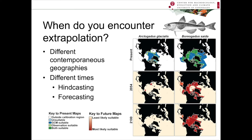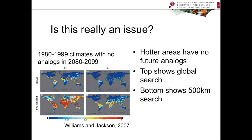You might ask yourself to what degree this sort of extrapolation is really an issue, especially regarding forecasting into time periods that are not that far into the future. The answer is that they can be quite different. These maps show where there will be less analogous habitat in the future — cooler areas have future analogs, while hotter areas have less and less similar habitat to what occurs at present. A2 and B1 are different climate scenarios. Looking globally, the Amazon and the tropics are going to lose analog habitat much more quickly than the temperate zones.